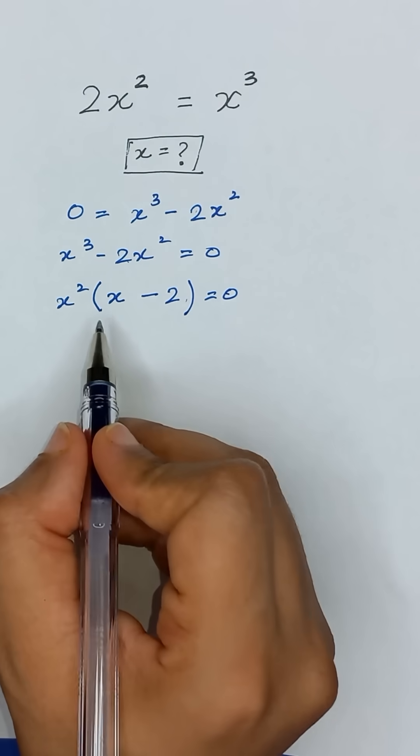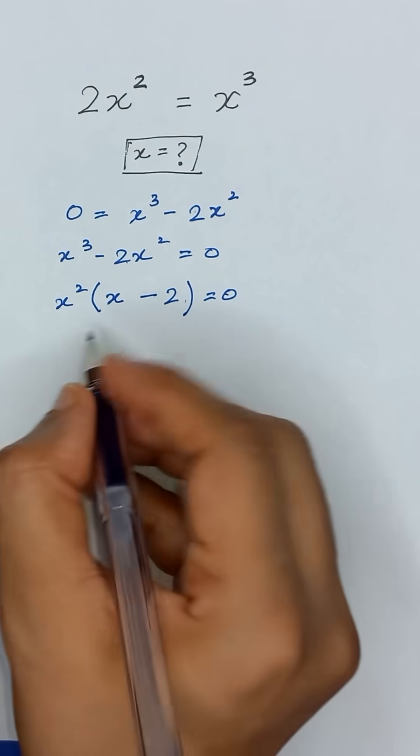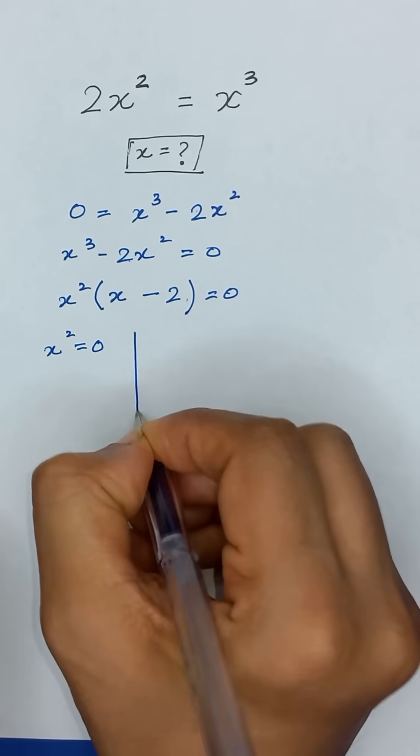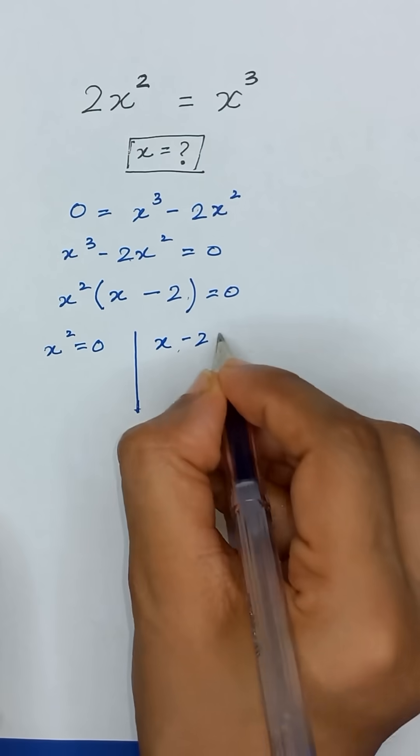Here we have two factors, x² times (x - 2). It means either x² is equal to 0 or x minus 2 is equal to 0.